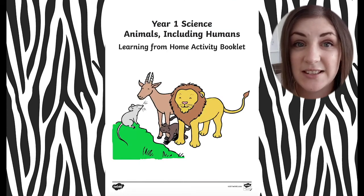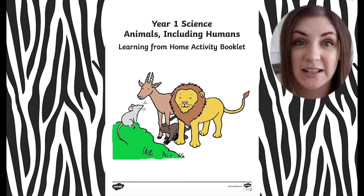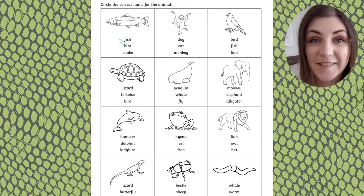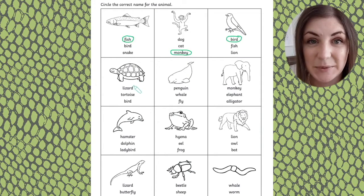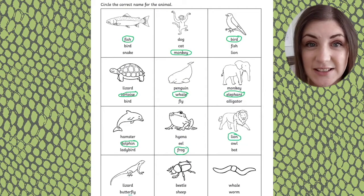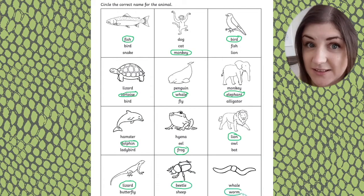This booklet contains lots of activities for children to start to explore animals and humans, as well as some ideas for practical activities which will encourage children to explore the natural and human-made world around them. This first activity asks the children to identify the correct name for these animals. Depending on children's reading and phonics ability, they may be able to read these words for themselves. It's also a great chance to talk about similarities and differences between animals, and of course at the end there's a chance to colour in.